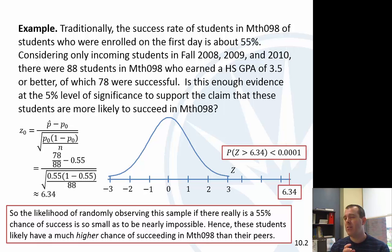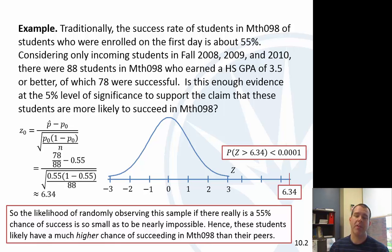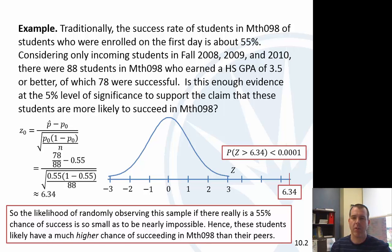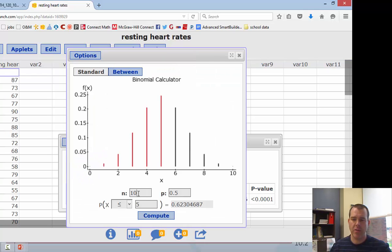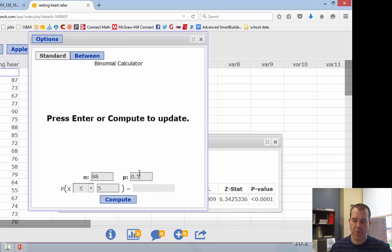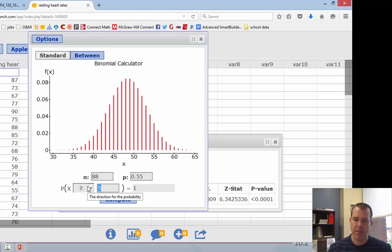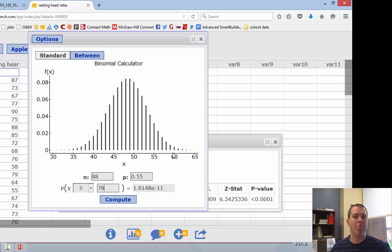Assuming independence of these students — though they could be in the same class, so that's a bit fuzzy — there are a fixed number of trials (88), and the probability of success is assumed constant at 0.55. If we go back to StatCrunch and do the binomial with n equals 88, p equals 0.55, and find the probability of at least 78, we get basically the same result. You can see where 78 falls — way off the table.